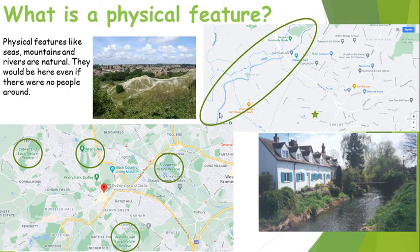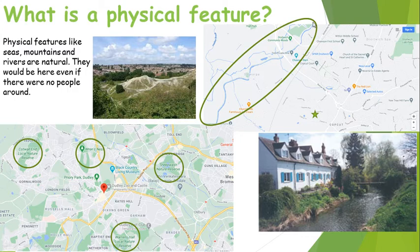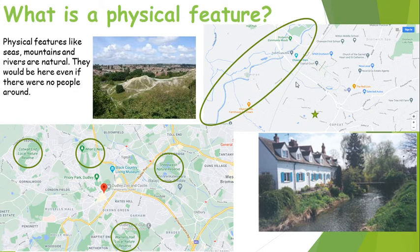In this map I've got a map of where I live. This little star is where Mrs Edwards lives and you can see there are some human features — some big roads — but this blue line here is a river. I'm very lucky because I live quite close to the River Salwarp, and it's a lovely natural physical feature in my geographical environment. So to summarise: a human feature is what people have made, a physical feature is what is natural, what's already there.